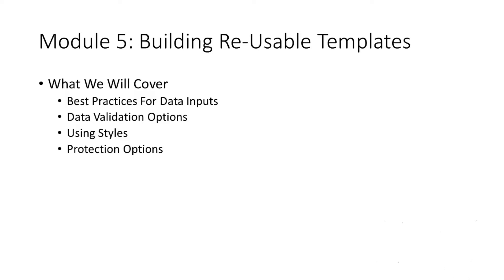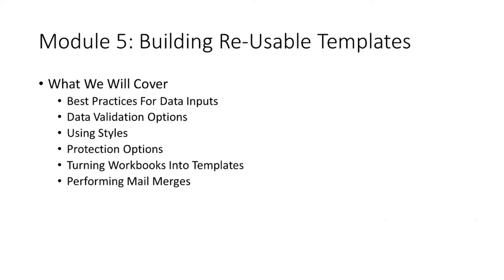Last for Excel, we're going to look at turning our workbooks into templates — taking forms we've built and repurposing them so they can be reused over and over again, turning our hard work into an investment. And finally, we'll build a mail merge template we can use to send out things like Dunning letters and other tasks as well.